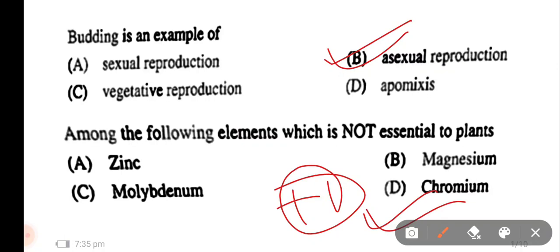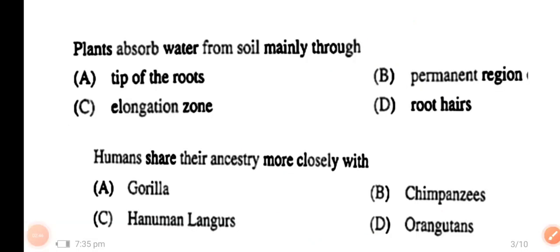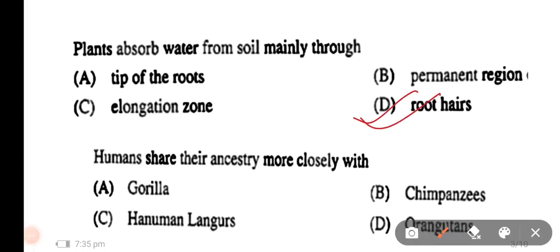Question number 3: plants absorb water from soil mainly through — the options are tip of roots, permanent region, zone of elongation, and root hairs. The right answer is option D: root hairs.